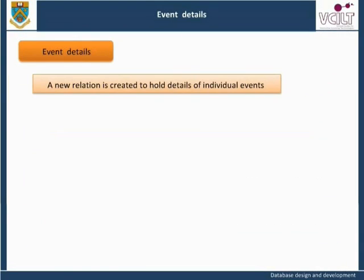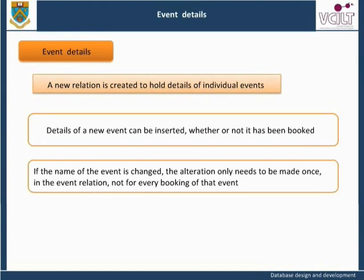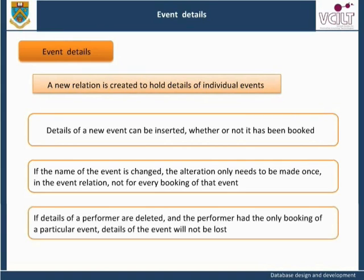A new relation is created to hold details of individual events. Details of a new event can be inserted whether or not it has been booked. If the name of the event has changed, the alteration only needs to be made once in the event relation, not for every booking of that event. If details of a performer are deleted and the performer had the only booking of a particular event, details of the event will not be lost.